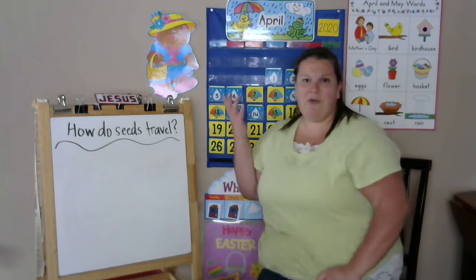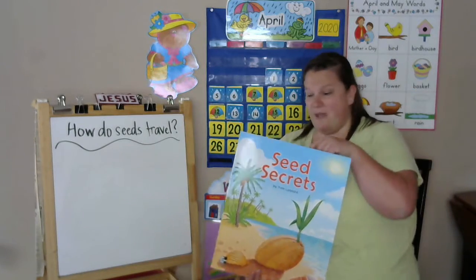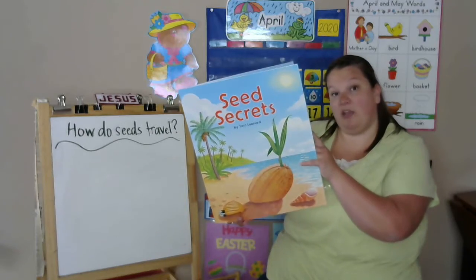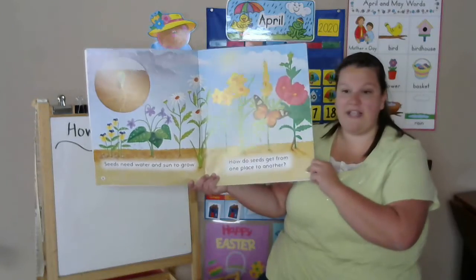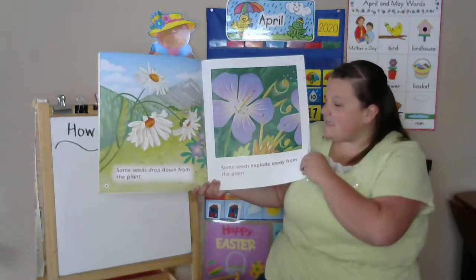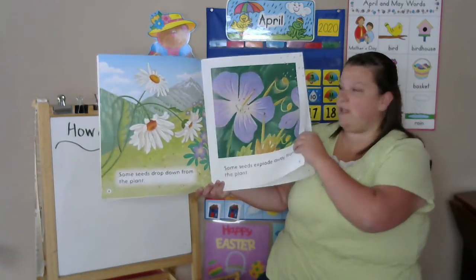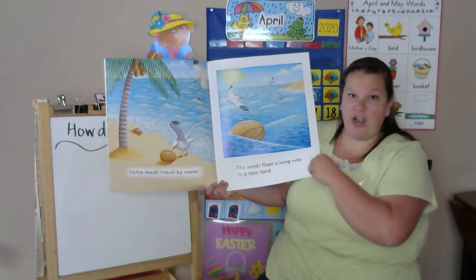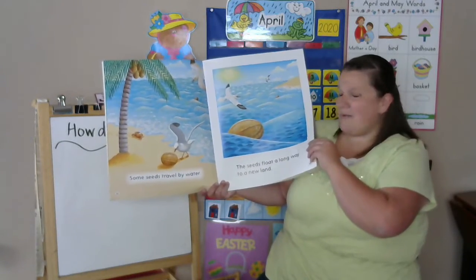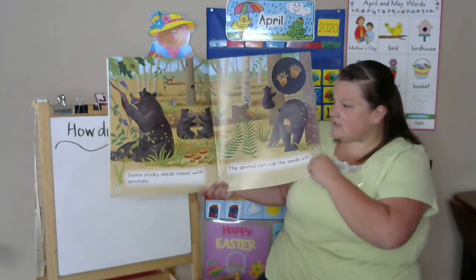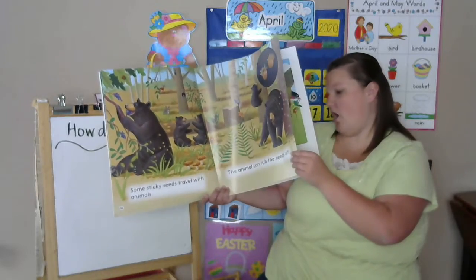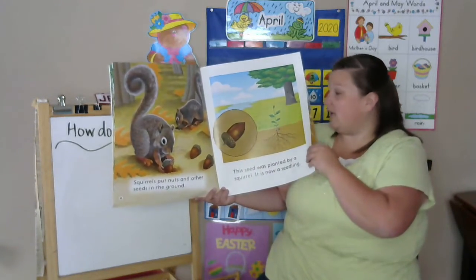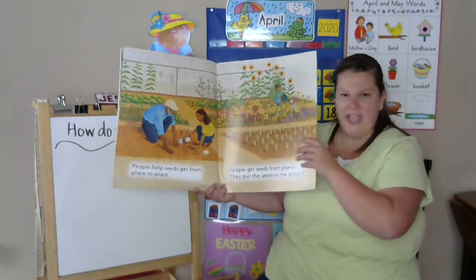Now on my board, how do seeds travel? Sometimes when we read books, we might not remember right away — it was yesterday. So sometimes we have to take our books and go back and retell. So how do seeds get from one place to another? Let's review. Some seeds drop down from the plant. Some seeds explode away from the plant. Some seeds travel by air, some by water. Some sticky seeds travel with animals — birds carry the seeds, squirrels take them, some more animals. And people. So that gave me enough ideas.